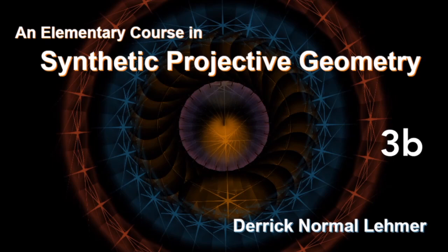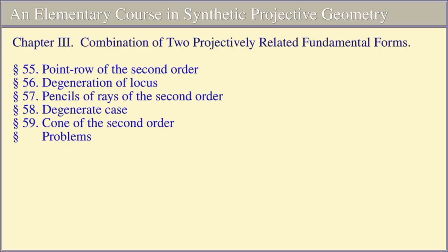An Elementary Course in Synthetic Projective Geometry by Derek Norman Lamer, Chapter 3 continued: Combination of Two Projectively Related Fundamental Forms. Section 55, Point Row of the Second Order. Section 56, Degeneration of Locus. Section 57, Pencils of Rays of the Second Order. Section 58, Degenerate Case. Section 59, Cone of the Second Order. Problems.